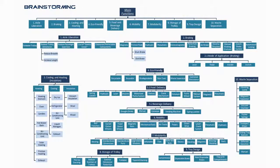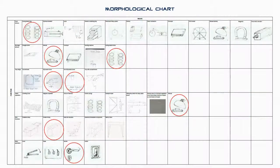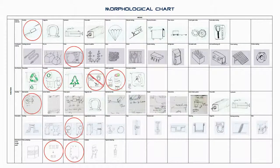A brainstorming session was then held between all the group members to identify potential solutions to each and every function. All possibilities were enlisted in a morphological chart, where a sketch for each solution was done so as to have a complete picture of all the potential solutions.